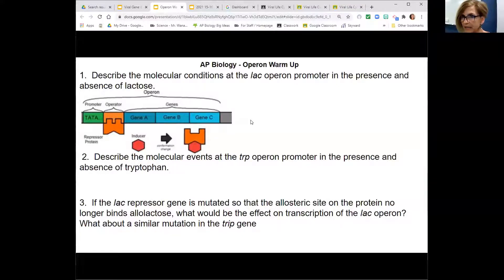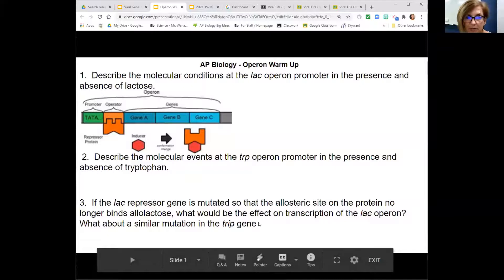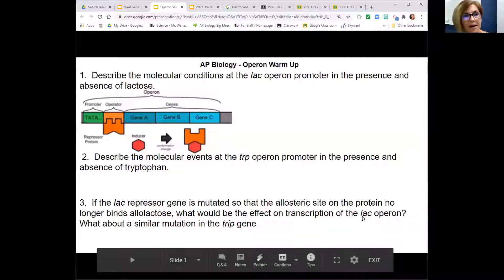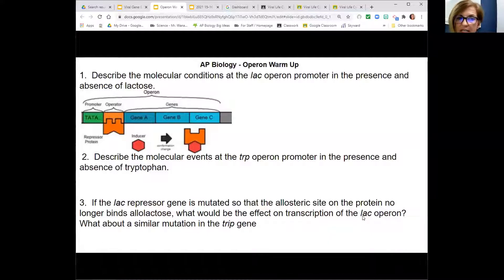Does anyone need that repeated? Okay, if the lac repressor gene is mutated so the allosteric site of the protein no longer binds allolactose, what would be the effect on transcription of the lac operon? What do you guys think? Is it go all the time or don't go at all? Put it in the chat.